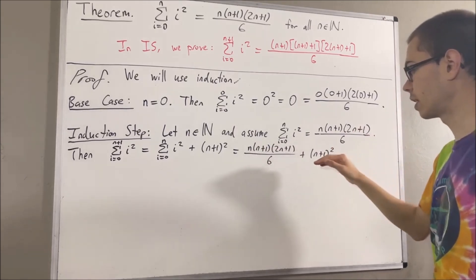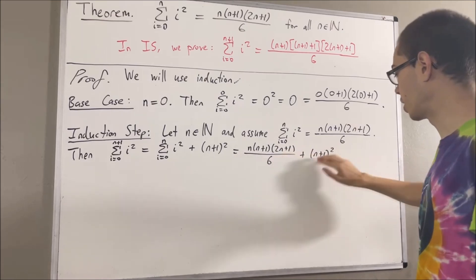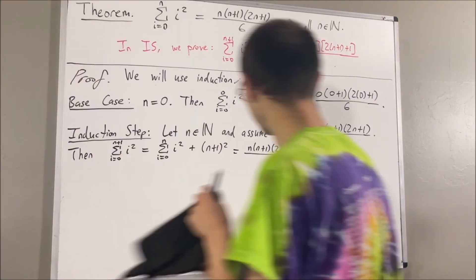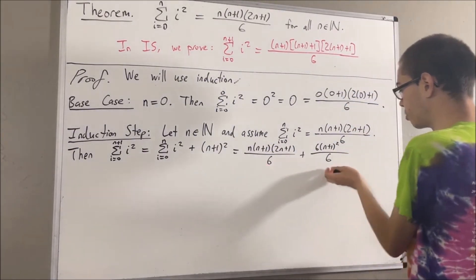Well, to do that, let's get a common denominator. Right here, we have a denominator of six. So here, we also want a denominator of six. So let's multiply and divide by six. And now, we can combine these two guys into a single fraction.